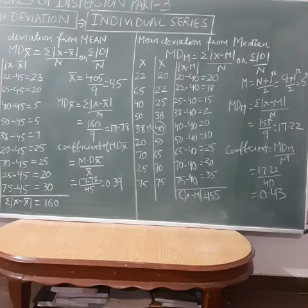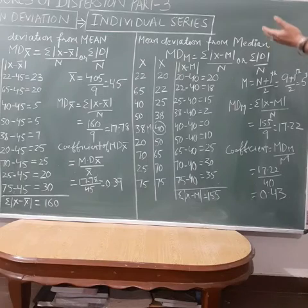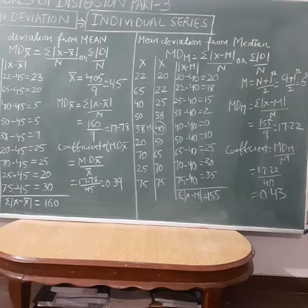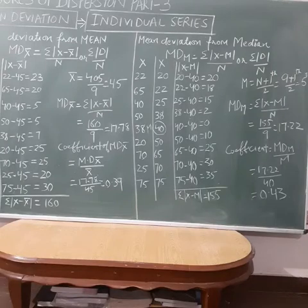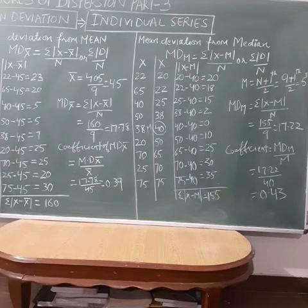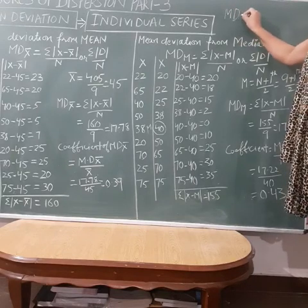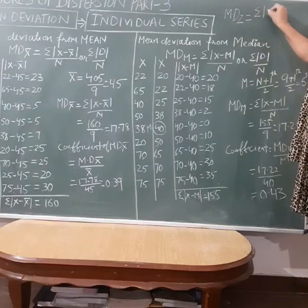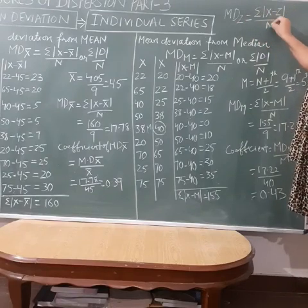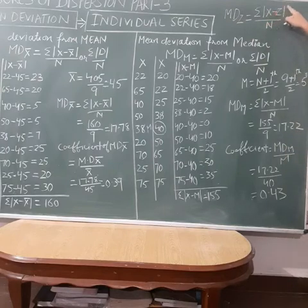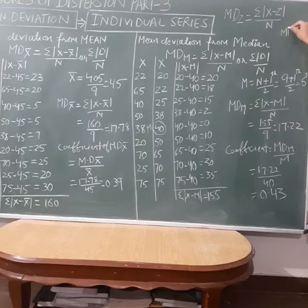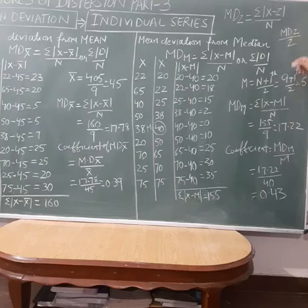So the formula is: MDm divided by m. In this numerical I cannot find the mode because no variable is repeating. If any variable repeats in a series, you can take that variable as the mode. For mean deviation from mode, only the formula changes to: summation of |x minus z| divided by n, and the coefficient is MDz divided by z.